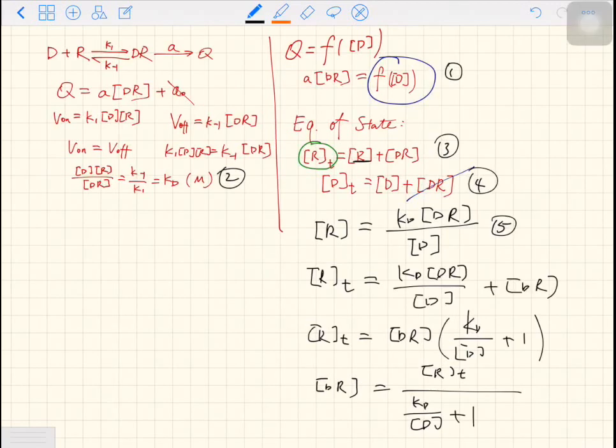So DR equals RT over KD over D plus one. And then we rearrange this equation to make it look better. On the left hand side, we have DR. On the right hand side, we have too many fractions. So we're going to multiply D on both top and bottom.